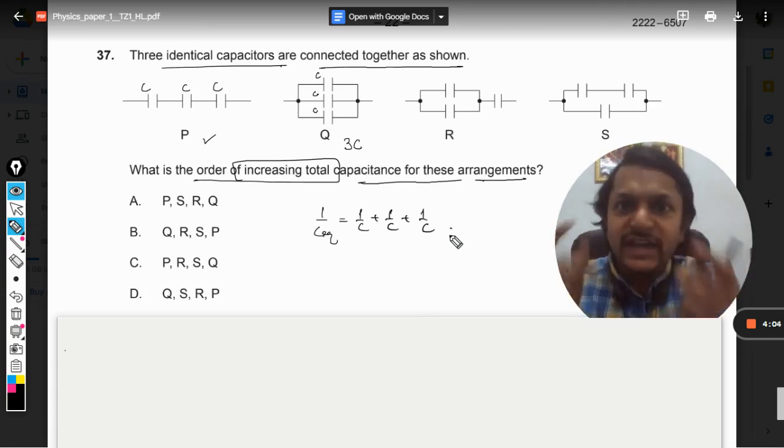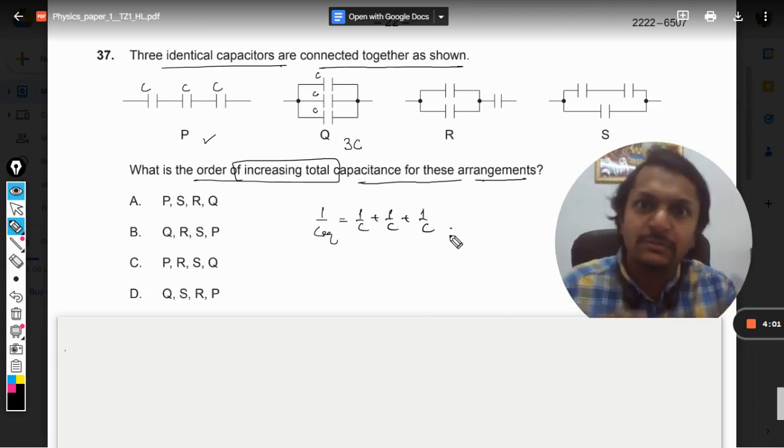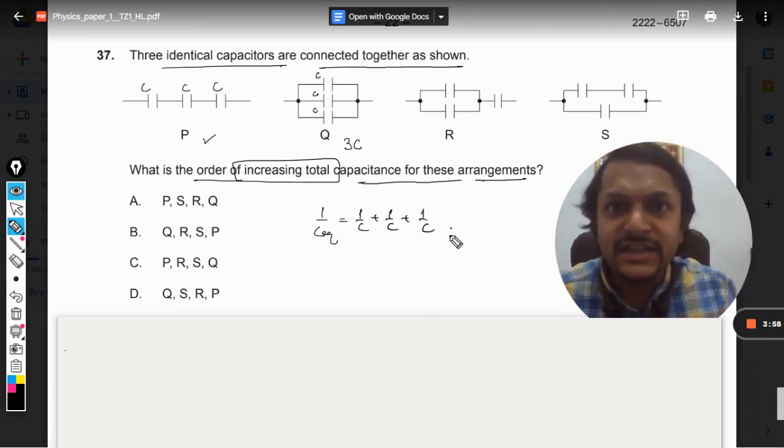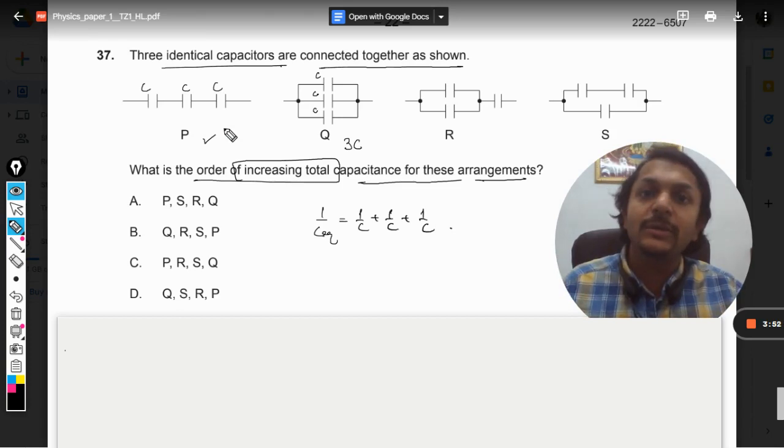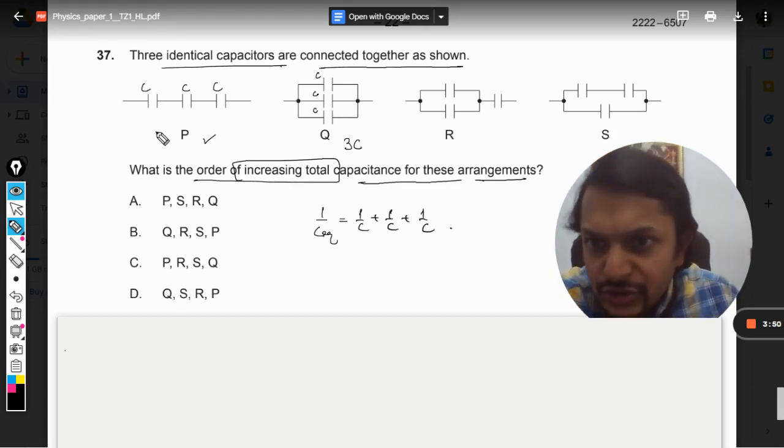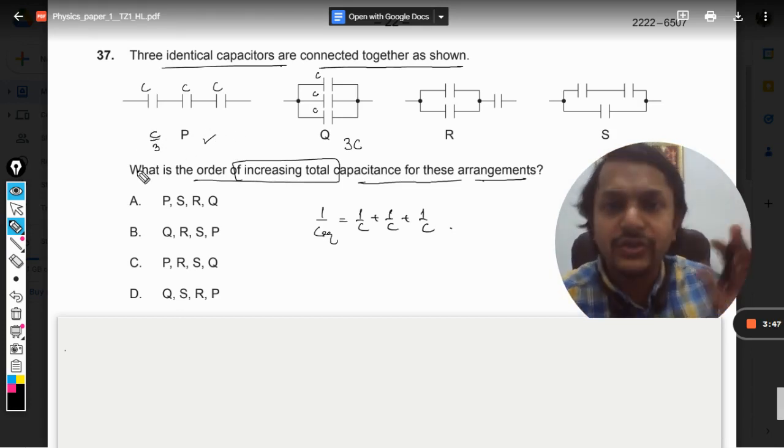But overall there is a shortcut we remember. If identical capacitors having the same capacitance are connected in series, they will be divided by the number of capacitors. For example, there are three capacitors, so the total capacitance will be C/3. Simple. So this is coming out to be C/3.